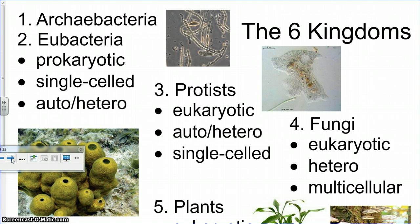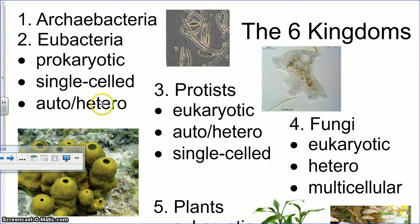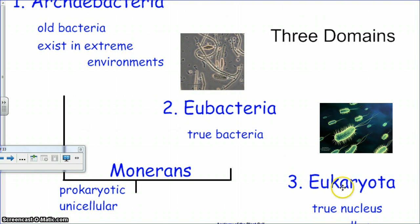There are other ways to classify all living things. Instead of using three domains, you can say that all living things live in one of the six kingdoms. The first group is archaebacteria and the second is eubacteria — both prokaryotic, single-celled, and either auto- or heterotrophic, meaning they either make their own food or need to ingest something for energy. All the eukaryotes have been further broken down into more groups, so the eukaryotes — which are everything that's not a moneran — are broken down into either protists, fungi, plants, or animals.